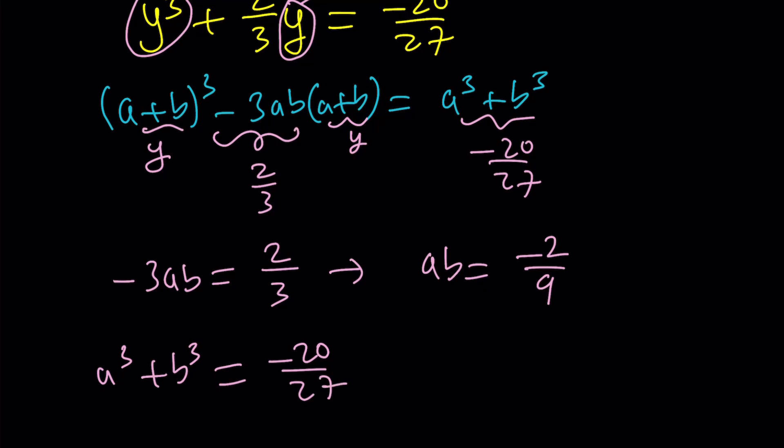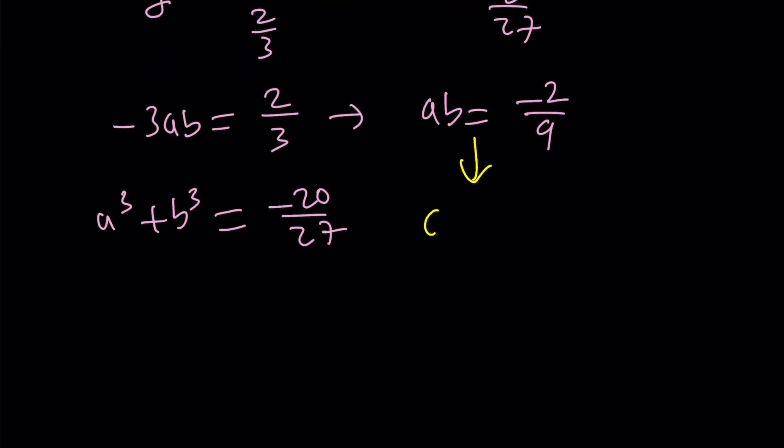It's actually quadratic because I can go ahead and cube both sides. a cubed b cubed equals negative 8 over what was 8 cubed? I think that was 729, right? 81 times 9. And then now I can go ahead and do the following.